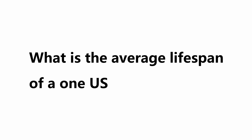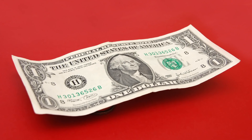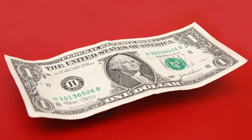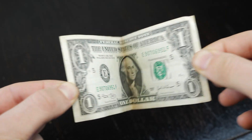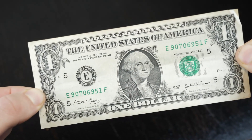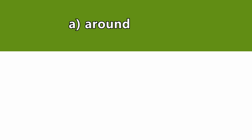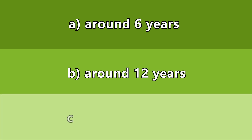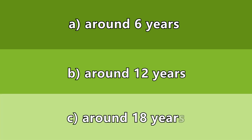What is the average lifespan of a one US dollar bill? A: around 6 years. B: around 12 years. Or C: around 18 years.